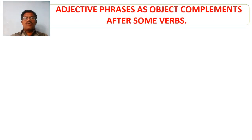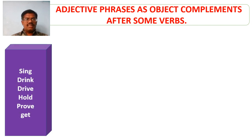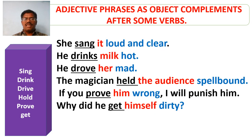Here are some more adjective phrases which can be used as object complements after certain verbs. Those verbs include: sing, drink, dry, hold, get. These verbs are used in sentences and are underlined. The objects are marked in red ink and the adjective phrases used as object complements are marked in blue ink. They include: loud and clear, hot, mad, spellbound, wrong, dirty.